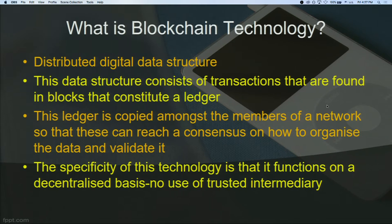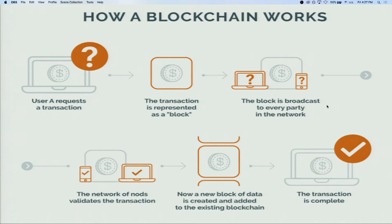The specificity of this technology is that it functions on a decentralized basis — in other words, there is no use of a trusted intermediary. I have a diagram here: User A requests a transaction, that transaction is represented in a block, the block is broadcast to every party on the network so they can verify its authenticity, and if authentic, they all validate it and a new block of data is added to the ledger, becoming part of the blockchain.